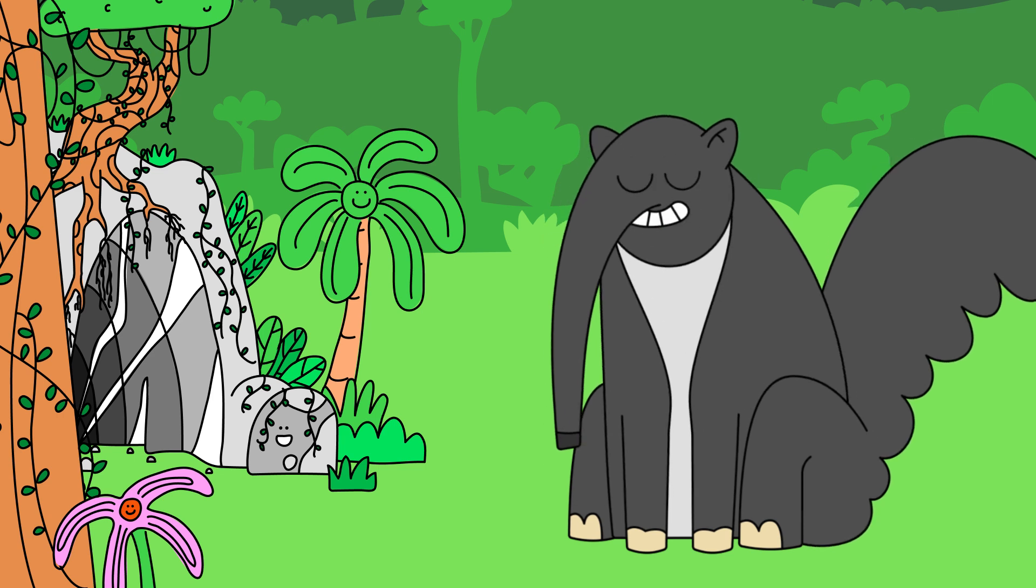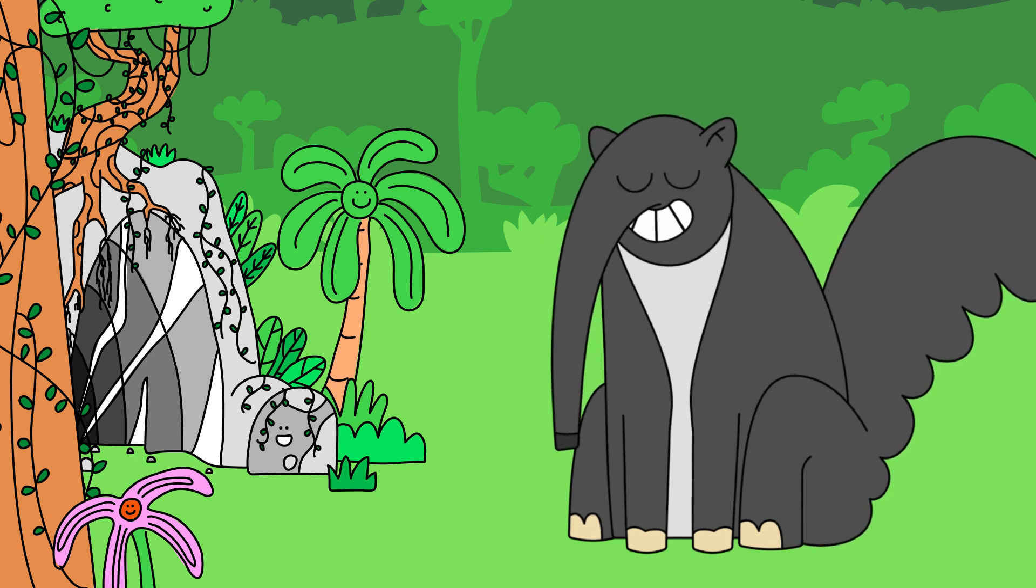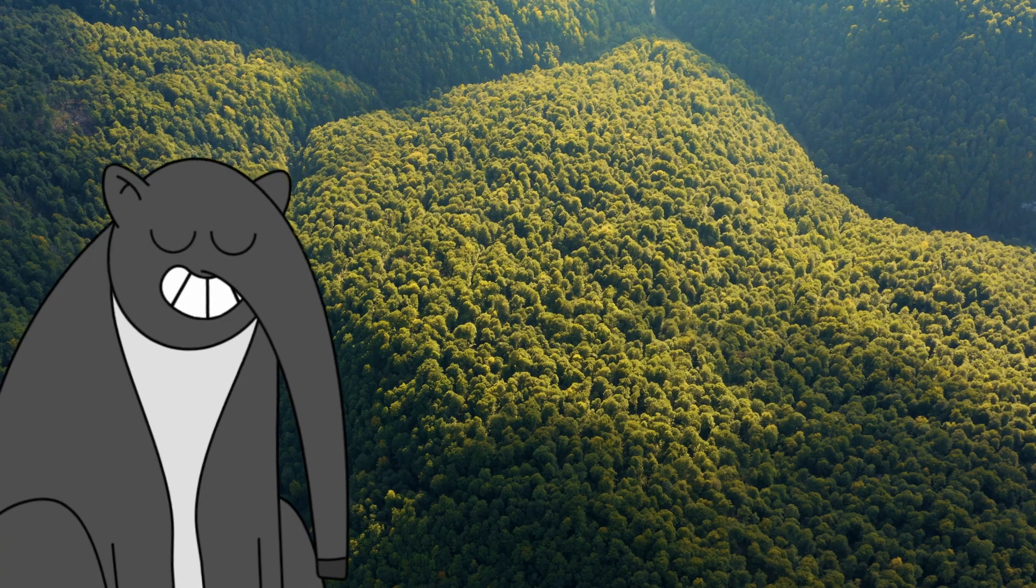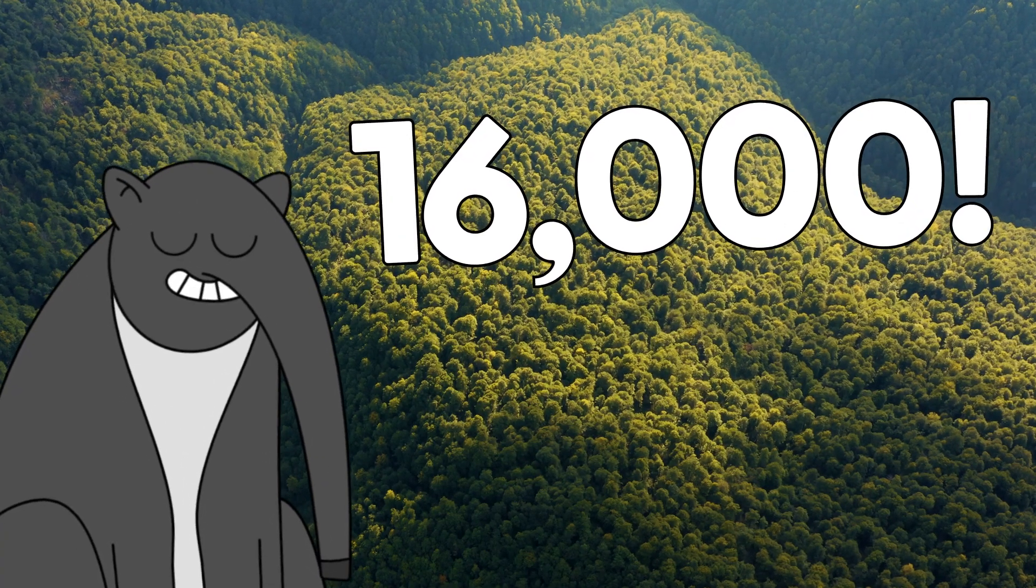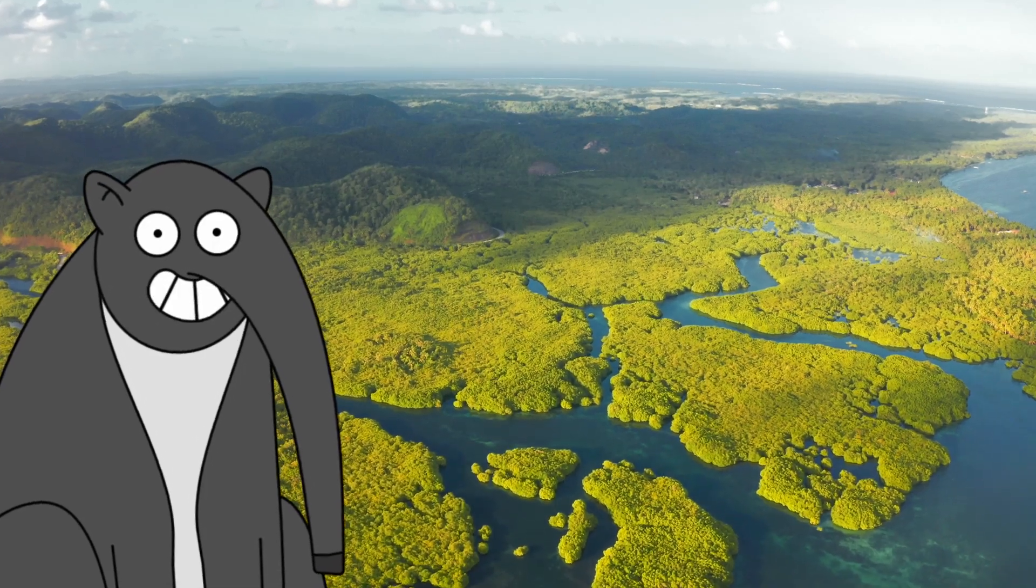Water is a huge part of life here in the rainforest! Let's check some stuff out! Trees! There are over 16,000 different species of trees here in the rainforest and they all get pretty thirsty!